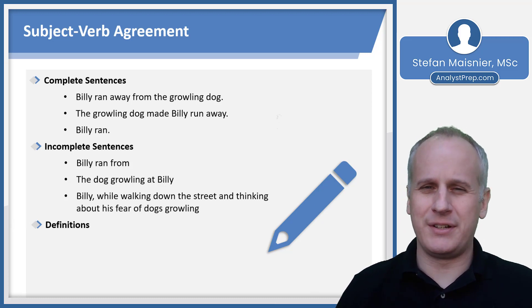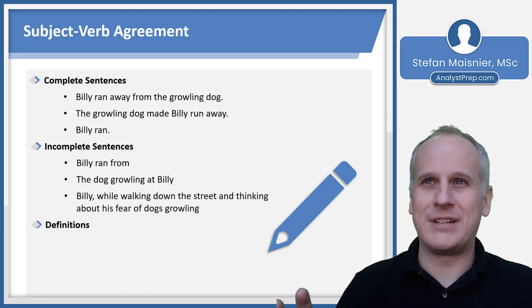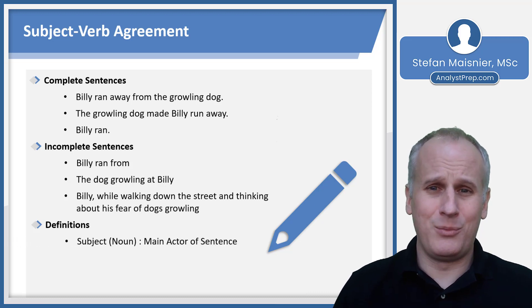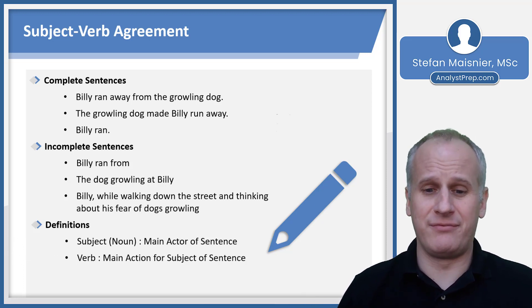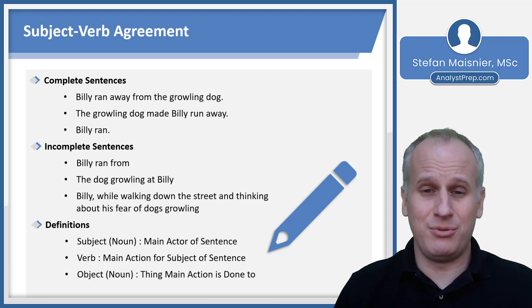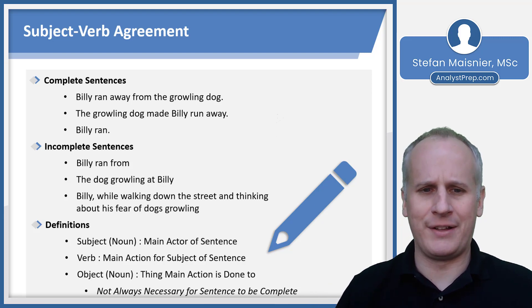Some definitions of terms: we won't focus much on technical grammar labels like adjectival phrases or dangling participles — just the meat and potatoes needed to succeed on this exam. Subject is a noun; it's the main actor of your sentence. Verb is the main action for the sentence. You need a subject and verb paired properly in terms of number and without ambiguity for a sentence to be complete. An object is the thing the main action is done to — also a noun — and while not always necessary, it will likely be present in just about every sentence correction you encounter.